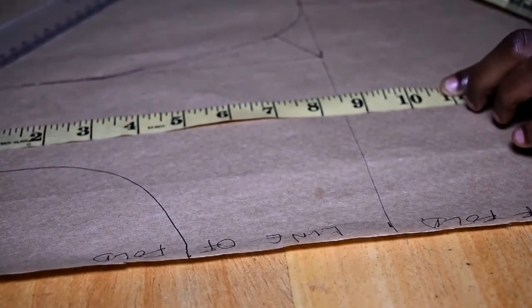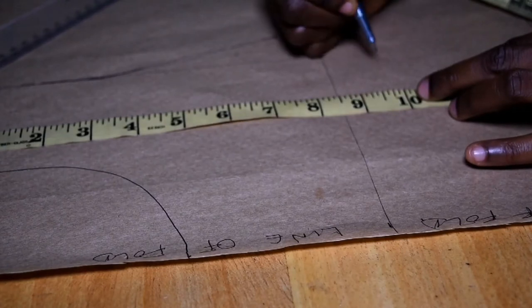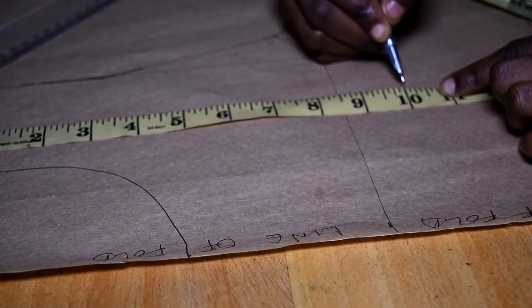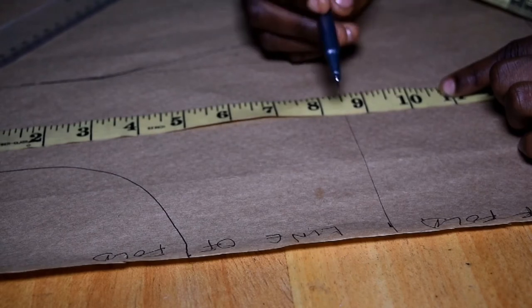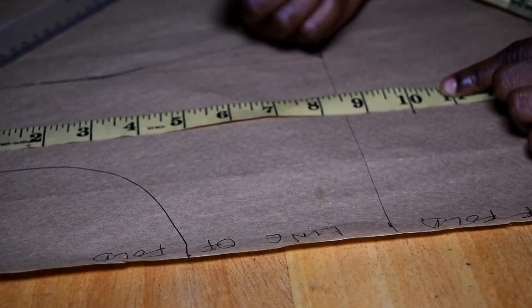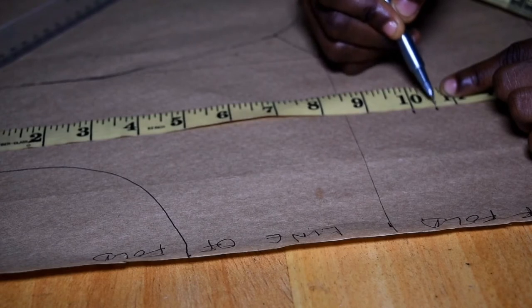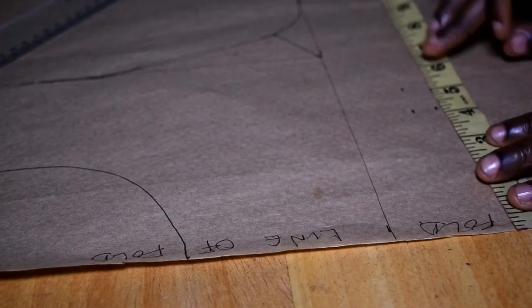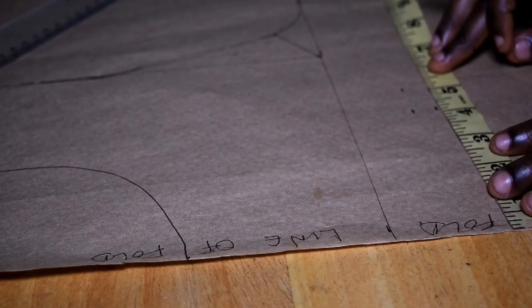In order to construct princess seams, you're going to connect your armscye to your darts. But for princess seams, the process is a lot different for that construction. So right now I'm going to be marking the center of my darts.